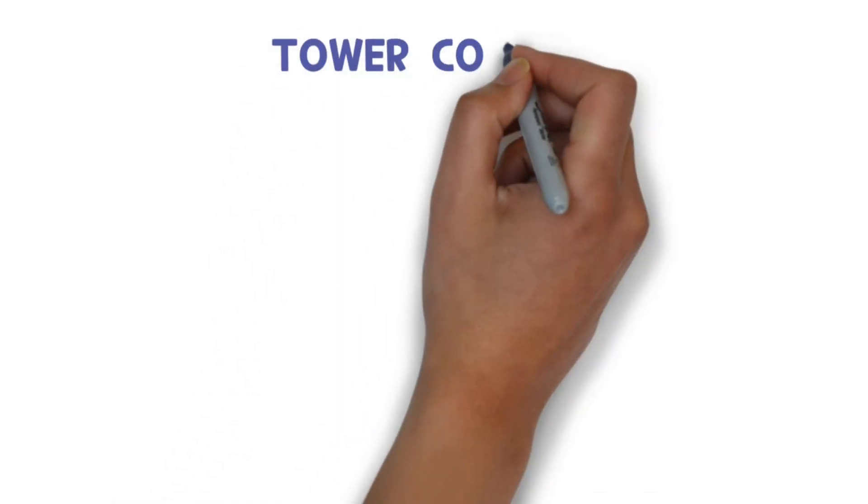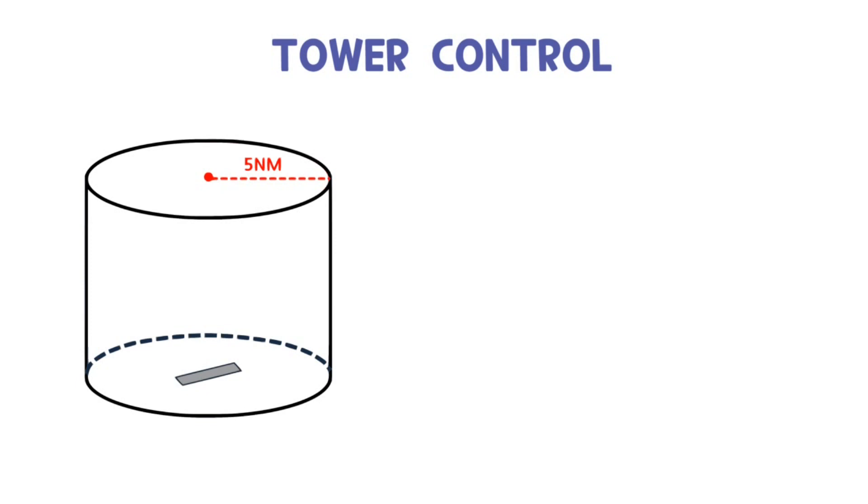On the other hand, the tower controller, which controls a much smaller area, must turn its head from side to side and keep the field of view wide.